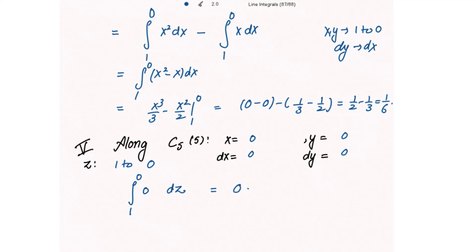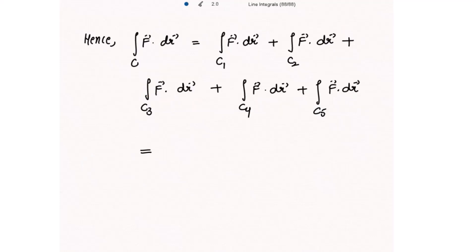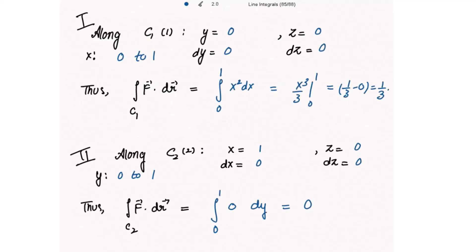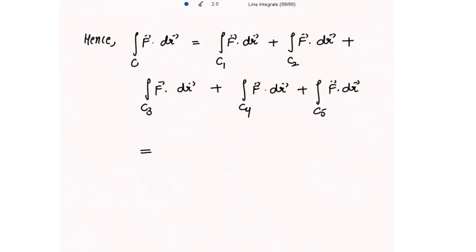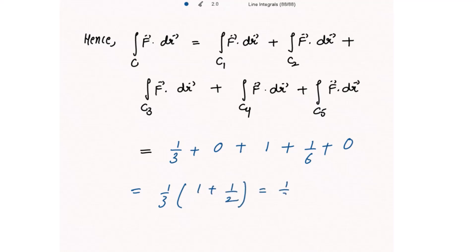Putting all values together, the complete line integral of F dot dr along the closed path C equals the sum of the integrals along C1 through C5: one-third plus zero plus one plus one-sixth plus zero. This simplifies to one-third plus one plus one-sixth, which equals one-third into three-halves, giving one-half as the required answer.